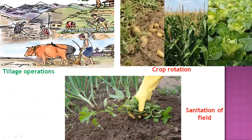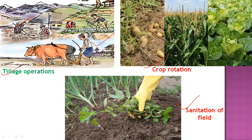Here we can see pictures: the first shows farmers using plowing operations, and another shows a laborer using weeding practices for removal of alternate weeds during land preparation. Tillage operations are very helpful in minimizing pest populations. For crop rotation, if farmers grow maize one year and vegetable crops the next, it breaks the continuous food supply and reduces pest populations. Sanitation through removal of alternate weeds destroys alternate hosts of pests.